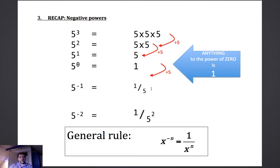And then divide that by 5 again to get the next one, so the next one in the pattern should be that 5 to the power of minus 2 is equal to 1 over 5 squared.